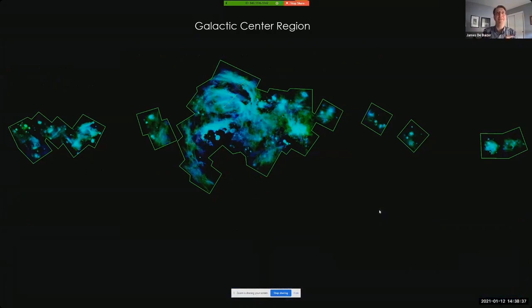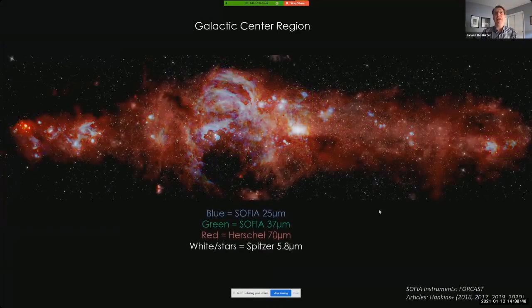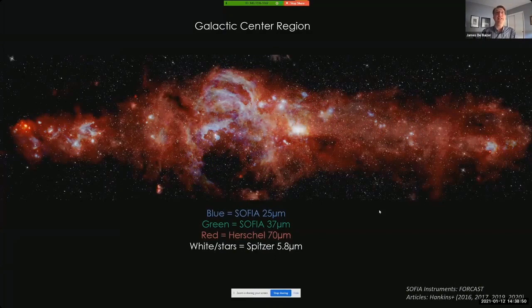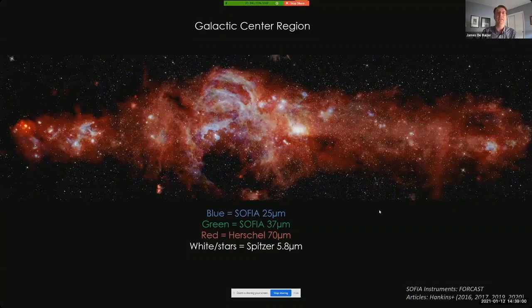So let's get back to the Galactic Center data. Combining these SOFIA data that you see here with Herschel 70 micron data and overlaying an unsaturated near-infrared image from Spitzer reveals this beautiful composite look at our inner galaxy. And I think this single image provides a simple but profound visual demonstration of the powerful synergies that are possible when SOFIA data is combined with data from other wavelengths, like those from facilities like Spitzer and Herschel.